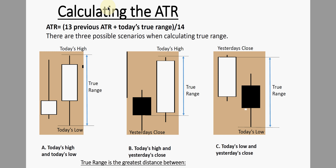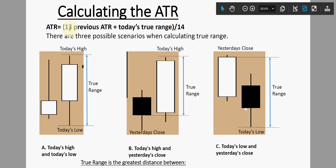To calculate ATR, like any indicator, you pick a time period. 14 days is commonly used. You add the present day's true range to that of the previous 13 days, then divide by 14. This gives you your initial ATR: today's true range plus the 13 previous true ranges, divided by 14.